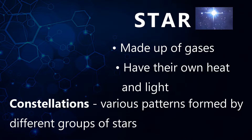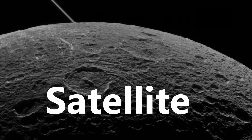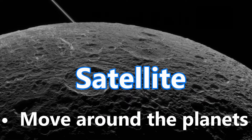A planet does not have its own heat or light — they receive light and heat from stars. We know Earth is a planet; it receives heat and light from the Sun. The word planet is derived from the Greek word 'planetai', which means 'wanderers'.